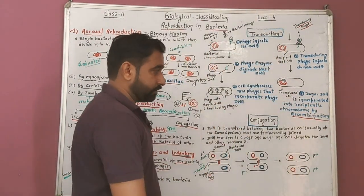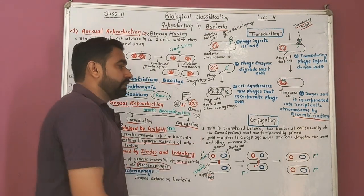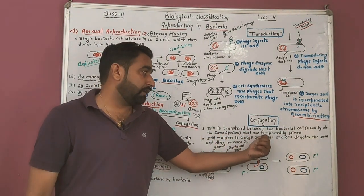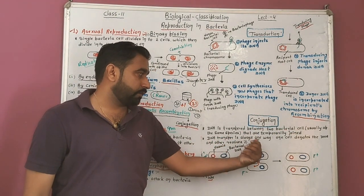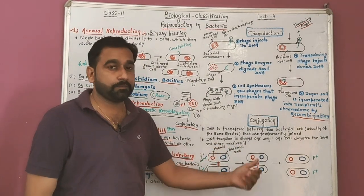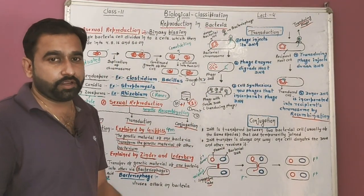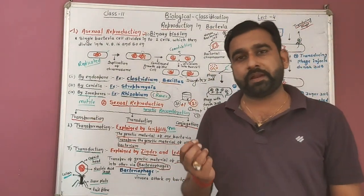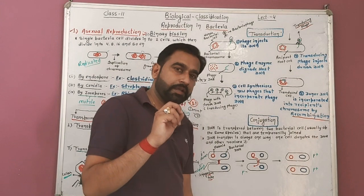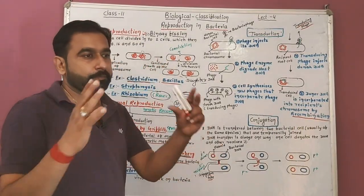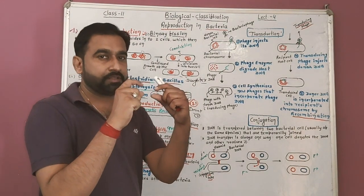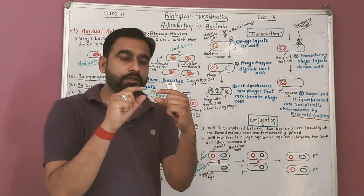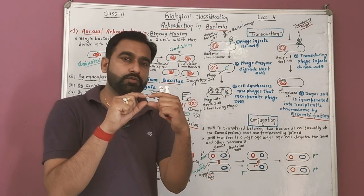Now we discuss conjugation. In conjugation, DNA is transferred between two bacterial cells, usually of the same species, that are temporarily joined. DNA transfer is always one way — one cell donates the DNA and the other receives it. Looking at the diagram: the F-positive donor cell has a fertility plasmid. The other cell without a fertility plasmid is called the F-minus cell. These two cells come together and a cytoplasmic bridge forms between them — this is called the conjugation tube. The pili present in bacteria help in the formation of this conjugation tube.